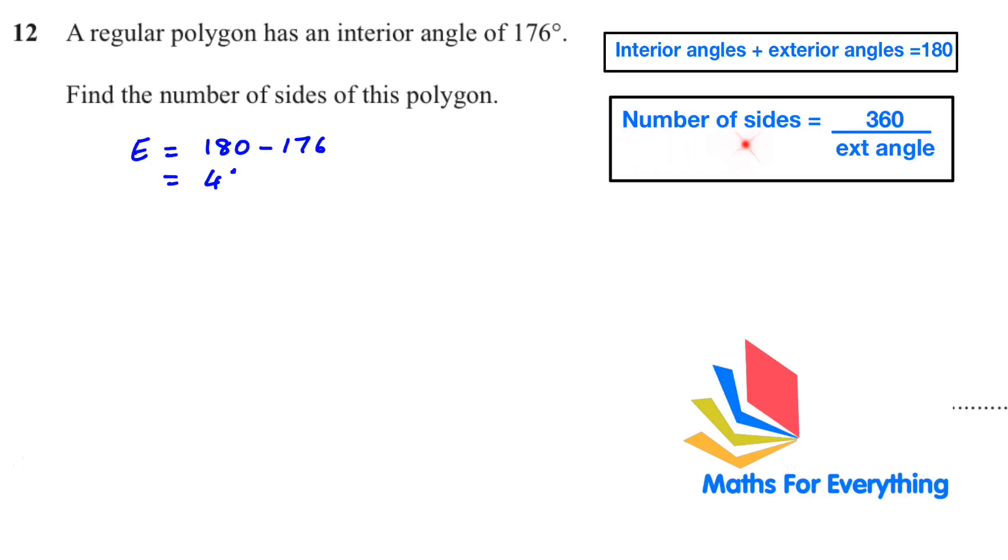Then we'll use the other part of the rule. Number of sides equals 360 degrees divided by the exterior angle. So to find the number of sides we are going to divide it by 4, because that's our exterior angle, and you will get 90. So the total number of sides are 90.